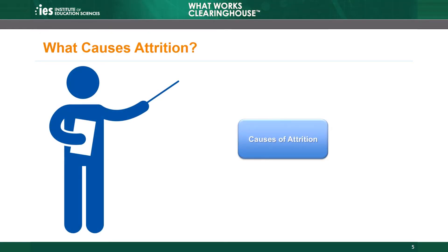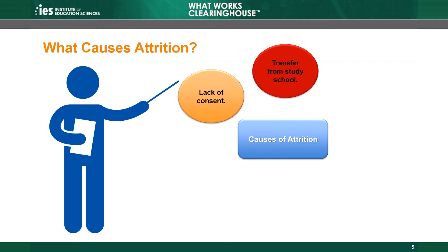What causes attrition? There are many reasons why a study may not include data for a sample member who went through random assignment at the beginning of a study. This slide presents a few causes of attrition, though it is certainly not an exhaustive list. For example, parents may not consent to their child's participation in the study. Students may move and transfer to a school that isn't participating in the study, or students may be absent when the study collects data.